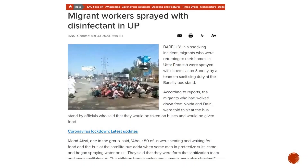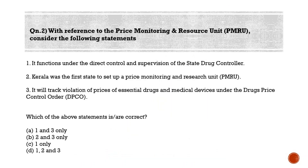We'll now move to the second question. With reference to Price Monitoring and Resource Unit (PMRU), consider the following statements. Statement 1: it functions under the direct control and supervision of the state drug controller. Statement 2: Kerala was the first state to set up a PMRU. Statement 3: it will track violation of prices of essential drugs and medical devices under the Drug Price Control Order (DPCO). Which of the above statements is/are correct?